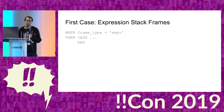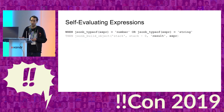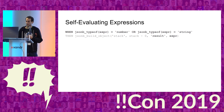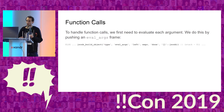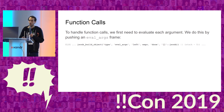We need to handle a bunch of different cases. The first case is expression stack frames — there are two sub-cases. One is self-evaluating expressions: if the type is a number or string, we set the result to the expression itself. For function calls, to evaluate a function call we need to first recursively evaluate each argument, so we push an eval_args frame onto the stack with the list of arguments to evaluate.